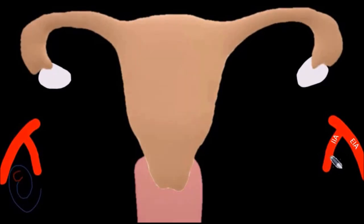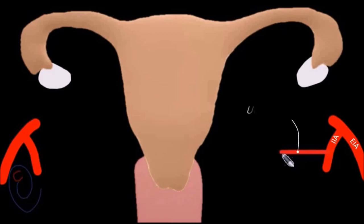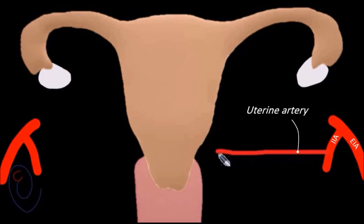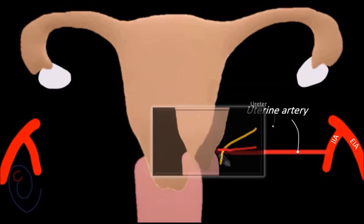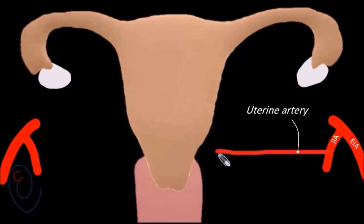The uterine artery is the main source of the uterine blood supply. It arises from the anterior division of the internal iliac artery, then moves medially towards the uterus. About 2 cm lateral to the cervix, the uterine artery crosses over the ureter, then reaches the uterus at the level of the cervico-uterine junction.